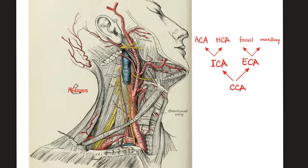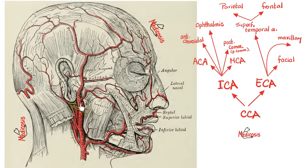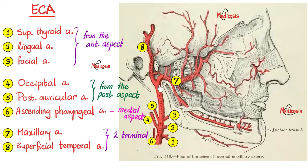The common carotid artery gives two terminal branches: the external carotid artery for the face and the internal carotid artery for the brain. The external carotid has eight branches. The two terminal branches are the maxillary artery and the superficial temporal artery. From the anterior aspect: superior thyroid artery, lingual artery, and facial artery. From the posterior aspect: occipital artery and posterior auricular artery. From the medial aspect: the ascending pharyngeal artery for the pharynx.